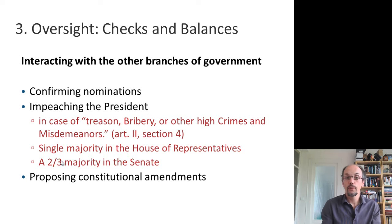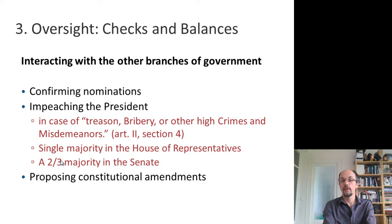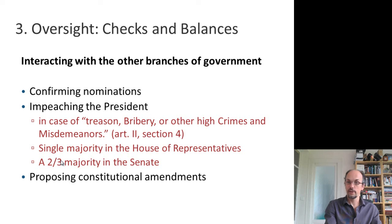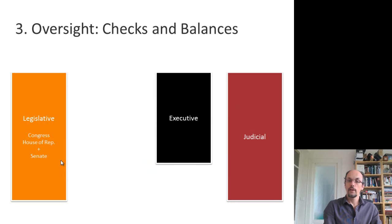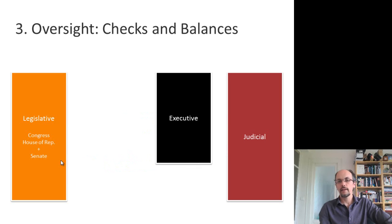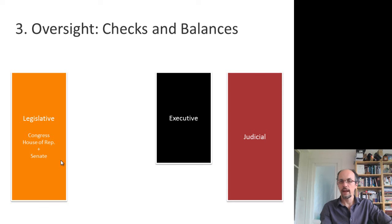Let us now pay attention to the third function of the US Congress: oversight. I've already shown you the powers which Congress has to interact with the other branches of government — confirming nominations, impeaching the president, proposing constitutional amendments. Today I will begin this presentation of the system of checks and balances: how the three branches interact with each other.